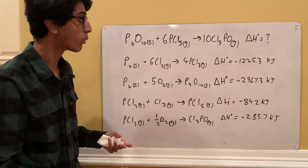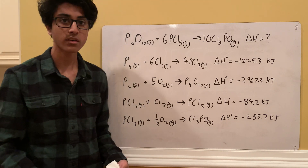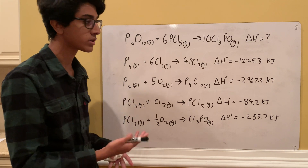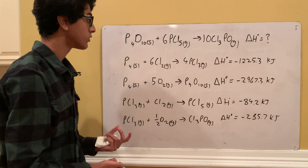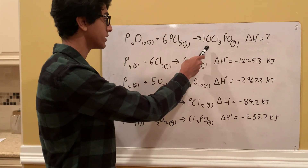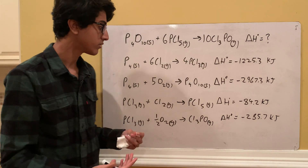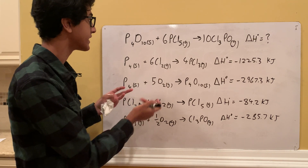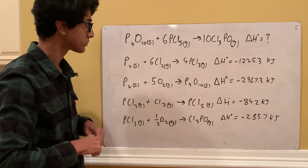We're given four other reactions that are different from the original, but we're given the change in enthalpy. What Hess's Law states is that when you add and subtract reactions, you can also add and subtract the change in enthalpy. We're going to use that to our advantage. Our goal is to rearrange these reactions so that when we add them all together, we get the target reaction.